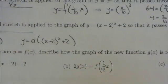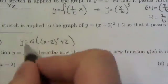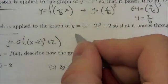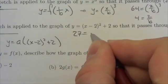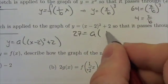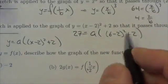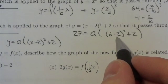the x coordinate is 6. So 6 minus 2 is 4, squared is 16, plus 2 is 18. So I've got 27 = a...